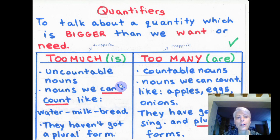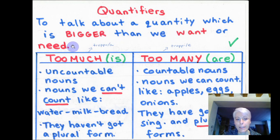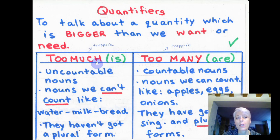Quantifiers are used to talk about a quantity which is bigger, which is more, than what we want or we need. In English, we use two forms.